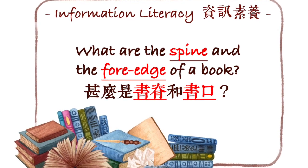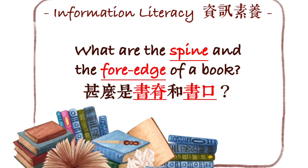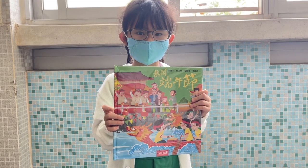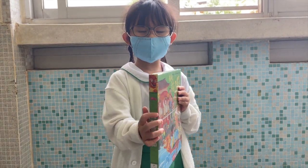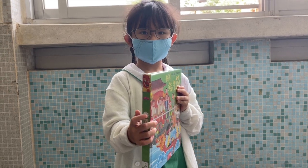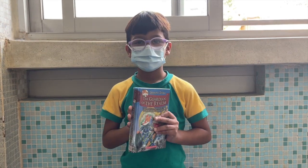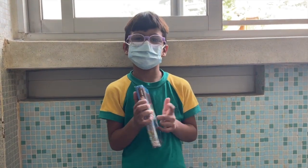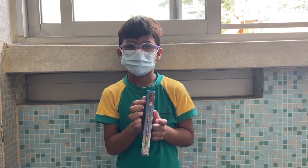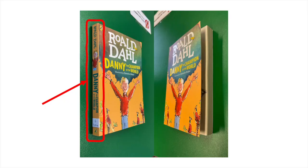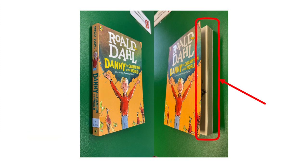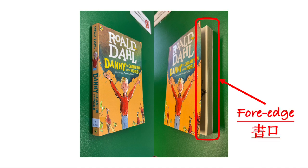Let's invite two students to answer the question. Do you know where is the book spine? Yes, I know that. This is the book spine. So once again, what is this? Book spine. How about this one? Correct, the four edges of a book.